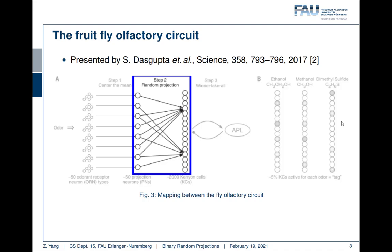This seems to be a very interesting approach because right now there are no parameters trained. The first step is just normalization. The second step, weights are binary and tags are generated to distinguish different odors.